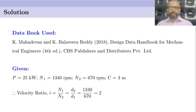The given data are: power P is 25 kW; N1, the speed of the smaller pulley, is 1340 rpm; N2, the speed of the larger pulley, is 670 rpm; and the center-to-center distance C is 3 m. The velocity ratio I can be found as N1 divided by N2, which also equals D2 by D1, giving a value of 2.